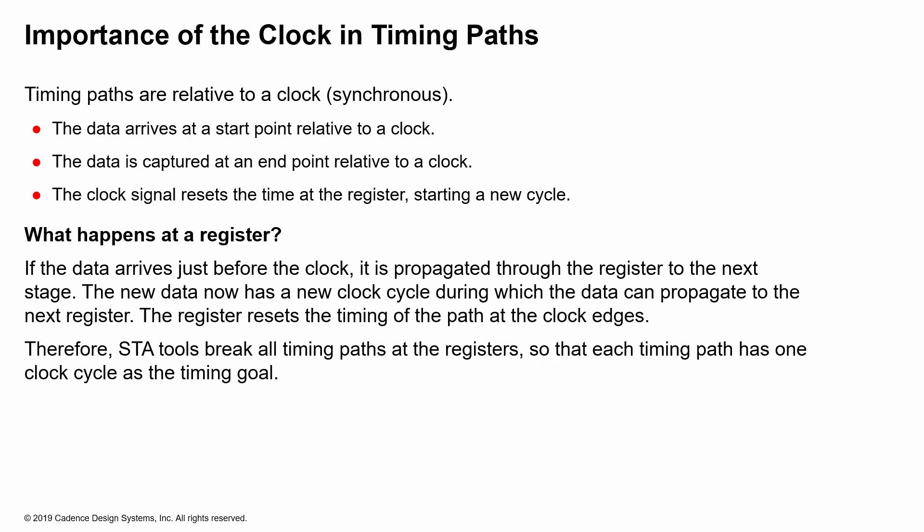The timing paths are broken down relative to a clock, meaning they're all considered synchronous. The data arrives at a start point relative to a launch clock, and then the data is captured at an endpoint relative to a capture clock. The clock signal resets the timing at the register and starts a new cycle. As long as the data meets both the setup and hold requirements, it is propagated through the register to the next stage, where the new data has a new clock cycle during which it can propagate to the register after that. Basically, the register or flop is resetting the timing of the path at the clock edges.